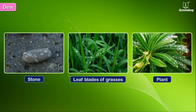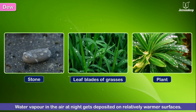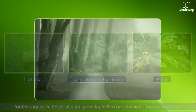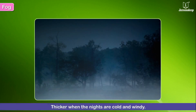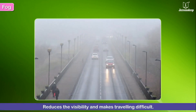Dew: water vapor in the air at night gets deposited on relatively warmer surfaces like stones, leaf blades of grasses, and plants — this is called dew. Fog: it is a thick cloud of tiny water droplets suspended in the atmosphere at or near the surface of the Earth. It becomes thicker when the nights are cold and windy. Fog reduces visibility and makes traveling difficult.